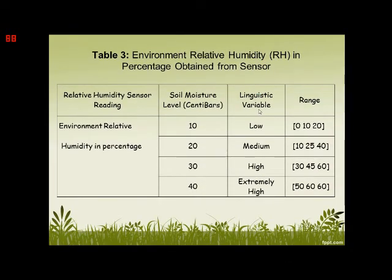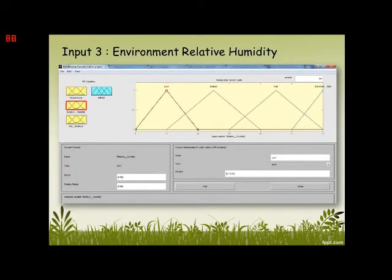The third input is environment relative humidity (RH) in percentage, obtained from the sensor. The relative humidity sensor reading levels in percentage are 10, 20, 30, and 40. The linguistic variables are low, medium, high, and extremely high, with lengths defined in MATLAB. This is Input 3 — environment relative humidity in MATLAB — it has low, medium, high, and extremely high, all in a triangular graph.